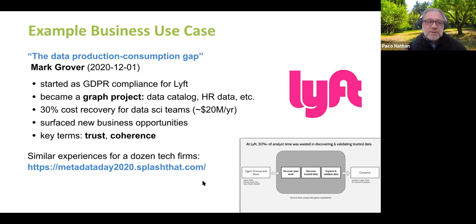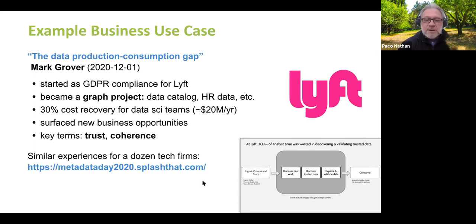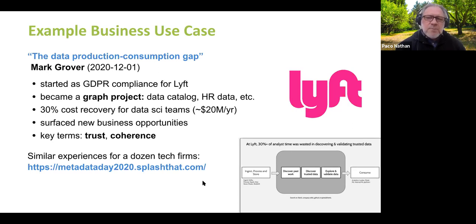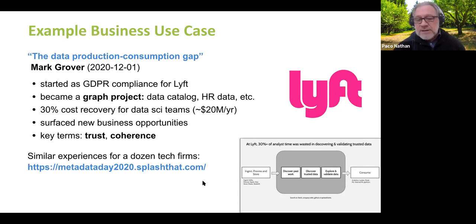From there, they were also able to find new business opportunities because they could have better insights about how different data sets might pair together. Mark Grover has actually spun out into a new company called stemma.ai. When you read his case study on Medium, some of the terms that come up are about coherence across silos across organizations, and also about trust — getting different parts of the organization to trust each other in the context of AI applications.